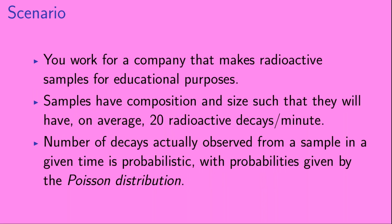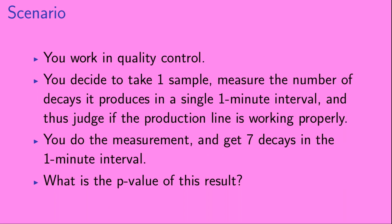Now let's think about an imaginary scenario. Let's say that you work for a company that makes radioactive samples for educational purposes. These samples have a very specific composition and size such that they will have on average 20 radioactive decays per minute. The actual number of radioactive decays observed from a sample in a given time interval is probabilistic, and those probabilities are given by the Poisson distribution. You work in quality control, and you decide to take one sample, measure the number of decays it produces in a single one-minute interval, and use this to judge if the production line is working correctly. You do the measurement and get seven decays in the one-minute interval.